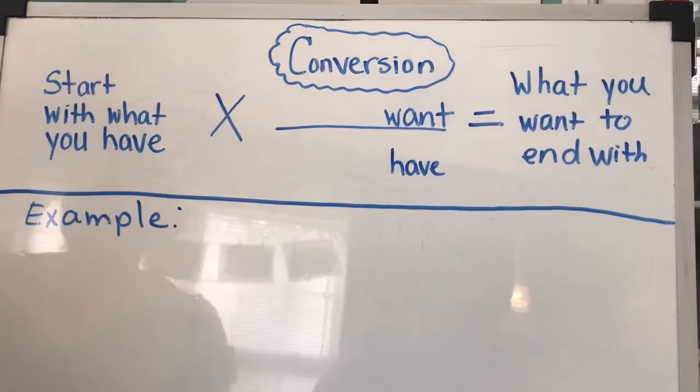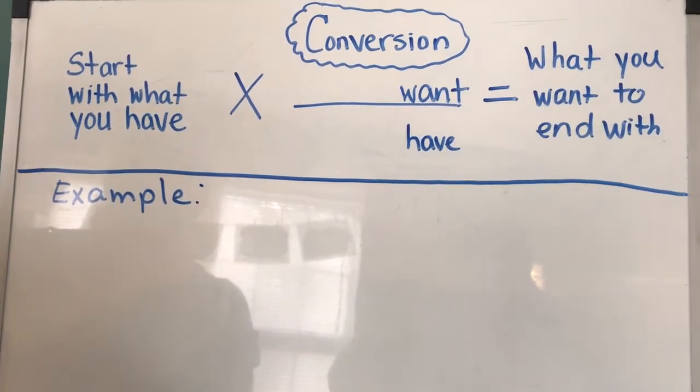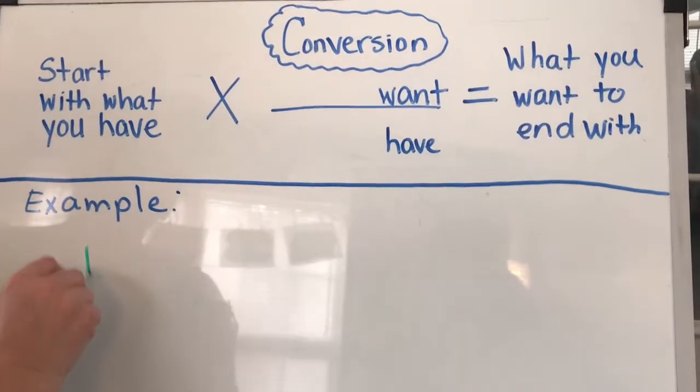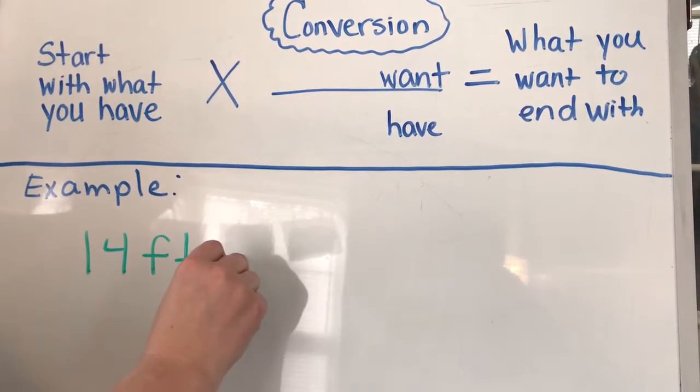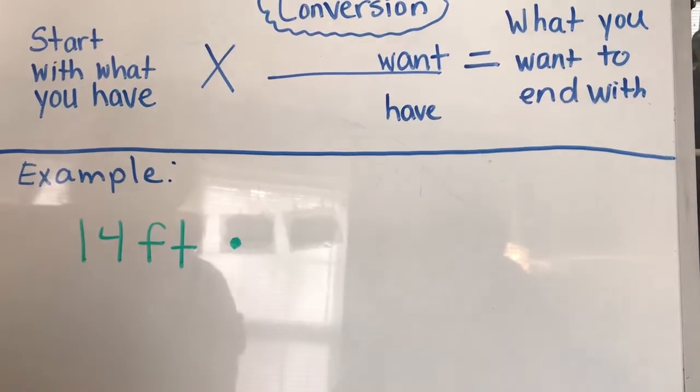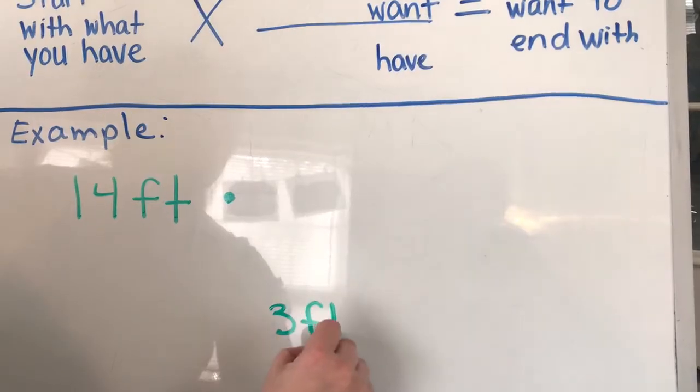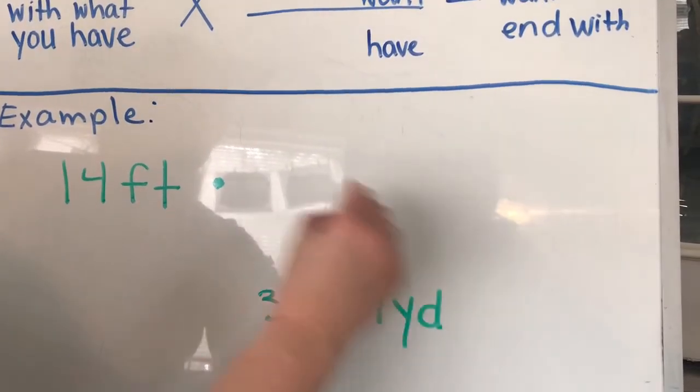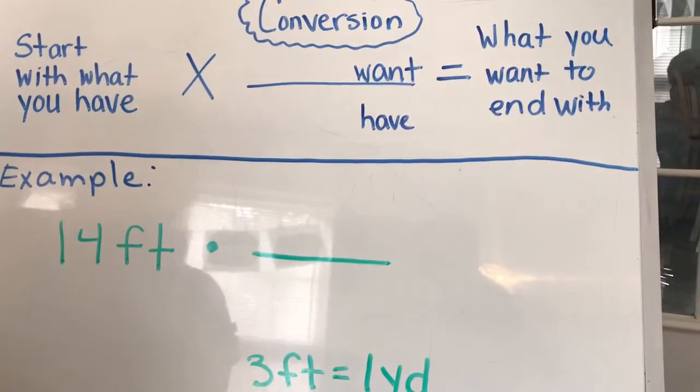So we're going to go through our first example and our first example says convert 14 feet to yards. So we know we have 14 feet. We're going to multiply by our conversion. Our conversion is 3 feet is equal to 1 yard. We're going to put our fraction bar. We always have our fraction bar at our conversion.